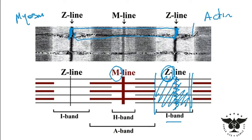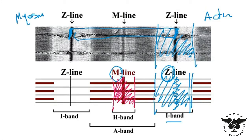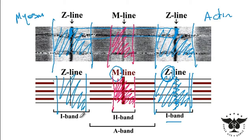Here is the length of one H band, and then finally we have another I band on the other side. The last band is the A band, which represents the length of an entire thick filament. The length of the A band is always constant, versus the I band and H band which will decrease in length upon muscle contraction.